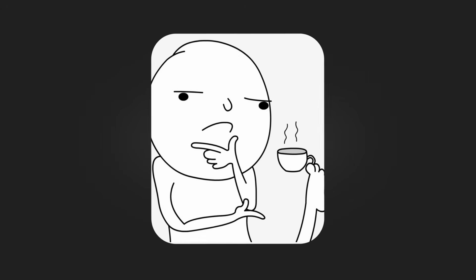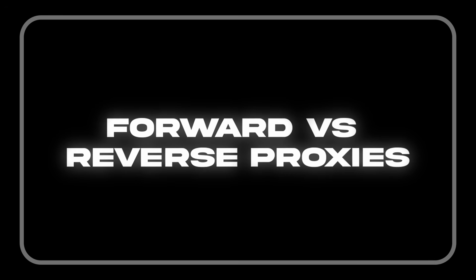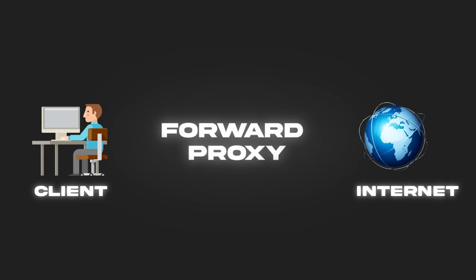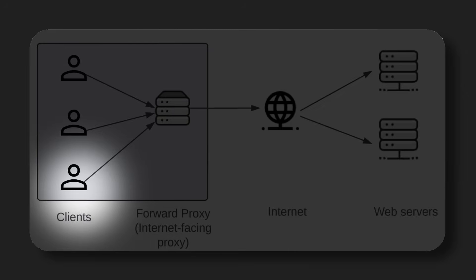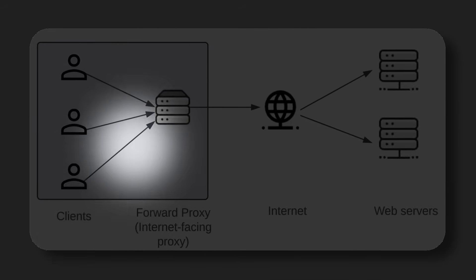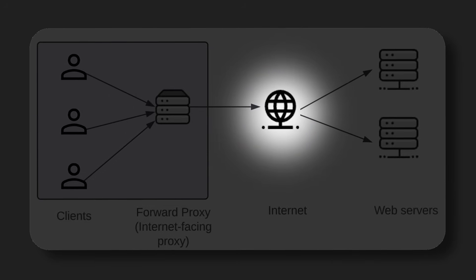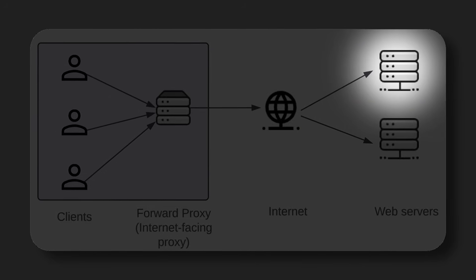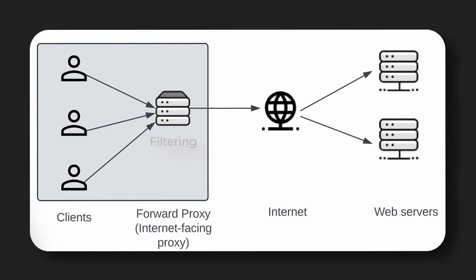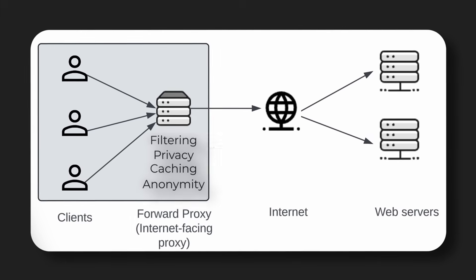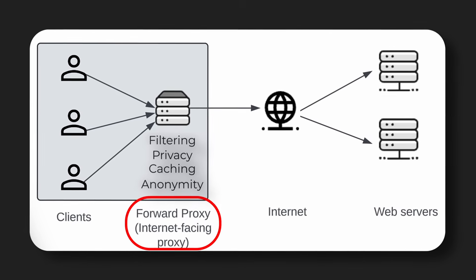You've probably heard of the concept of forward versus reverse proxies — but what does this mean? A forward proxy sits between clients or users and the internet. The client knows about the proxy and explicitly sends traffic to it. This is the standard model for personal or organizational use. Filtering, privacy, caching, and anonymity all fall under forward proxy use.